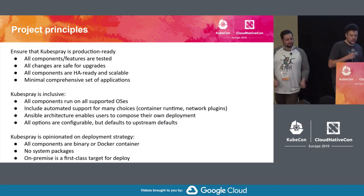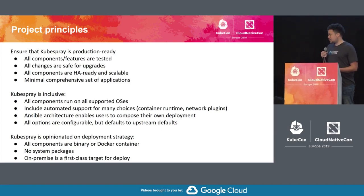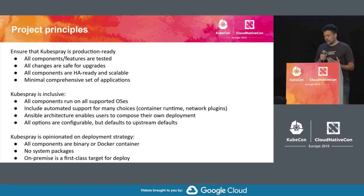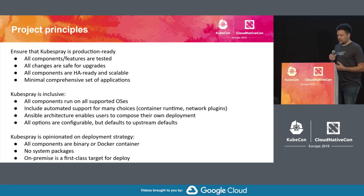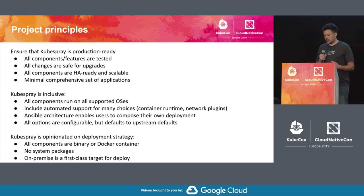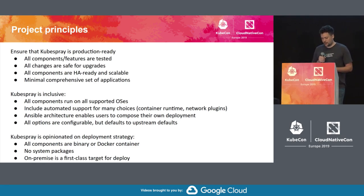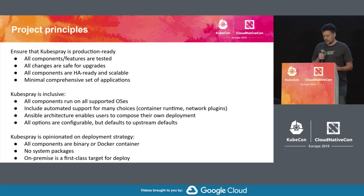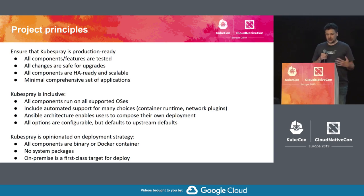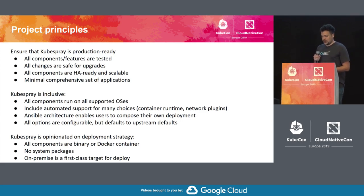Before we start, just to introduce the goals and principles of the project: one of them is to focus on production clusters. We try to test every component, and what is important is being able to upgrade from one version to another at all times. HA and scalable. We also don't package a lot of applications bundled with it — we try to refocus on the core components. It's also meant to be composable: we're inclusive to adding new plugins. You can have the choice of container runtime, network plugin, and so on. The project itself tries to not have an opinion about what's best for you to run, including different operating systems.